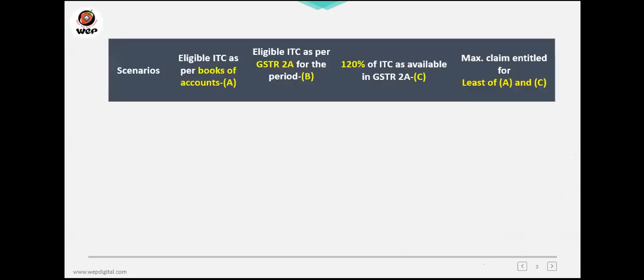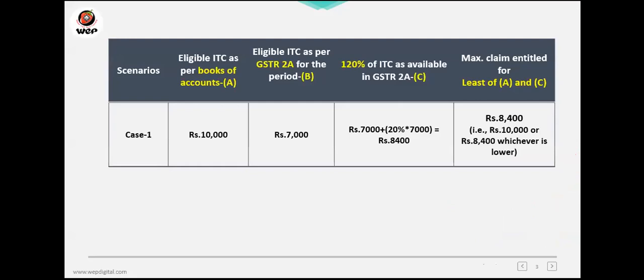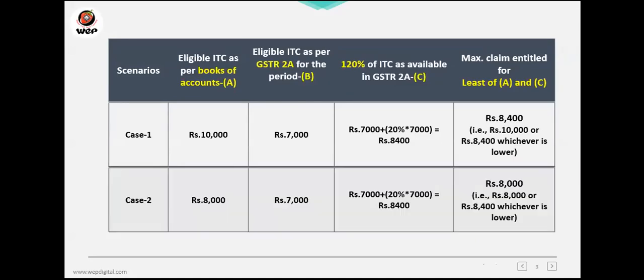Let's explain the rule with an example. Scenario one: as per your books, eligible ITC is 10,000. As per GSTR 2A, it is 7,000. Now 120% of GSTR 2A becomes 7,000 plus 20% of 7,000, which is 8,400. Comparing books value of 10,000 with 8,400, you claim whichever is lesser. Since 8,400 is lesser, you can claim 8,400.